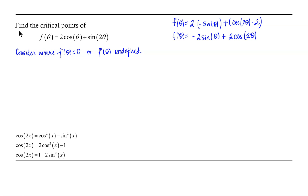Now, let's look at the easier of our two criteria: where f prime of theta is undefined. Because this function involves sines and cosines, the derivative is defined for all real numbers. So there are no values of theta for which the derivative is undefined — f prime of theta is defined for all real numbers.